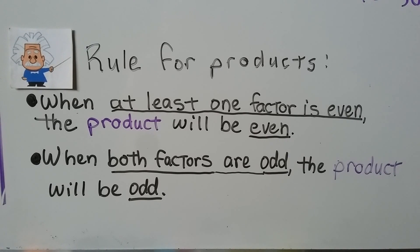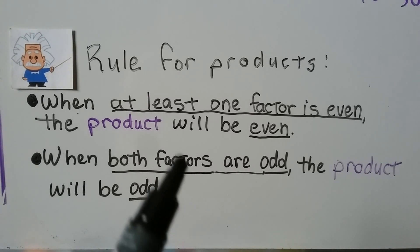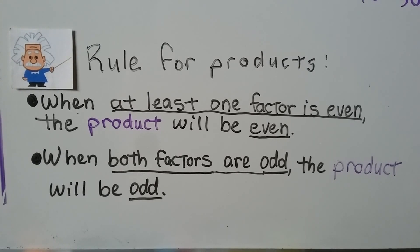So we have a rule for products. When at least one factor is even, the product will be even. When both factors are odd, the product will be odd. This is a good rule to know because when you're doing a multiplication problem, you'll be able to tell if the product should be even or odd — so you'll know if you got it right. If you multiply two odd numbers but your product is even, you know you made a mistake.